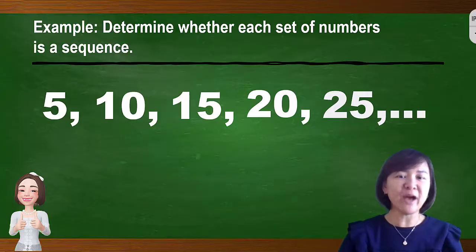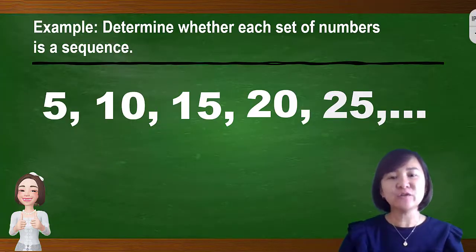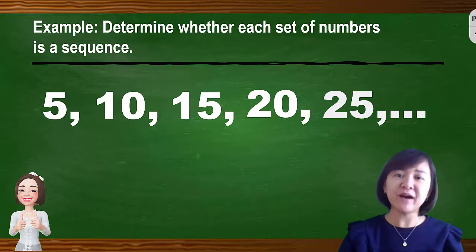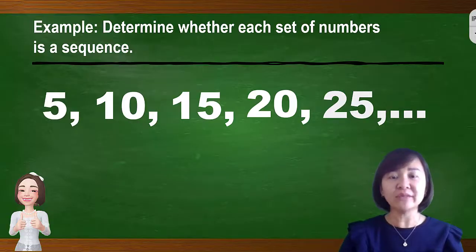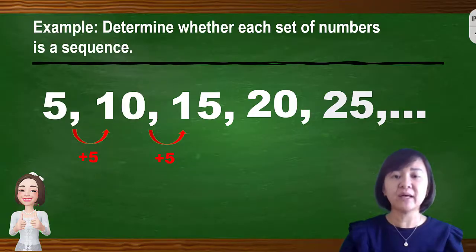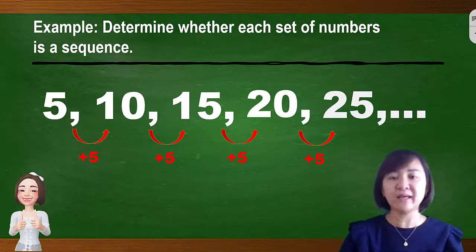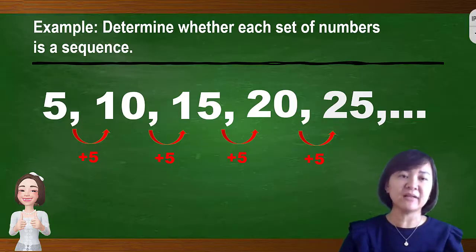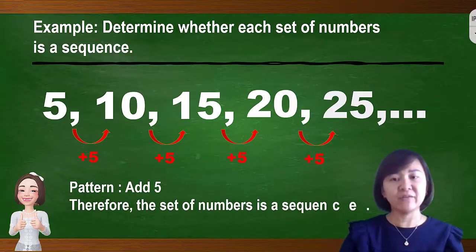Next, an example to determine whether each set of numbers is a sequence. We need to determine whether the given set of numbers is a sequence or not. To identify whether it's a sequence, we must find out the pattern. From 5 to 10 to 15, the pattern is plus 5. From 10 to 15 is also plus 5. The next term is 15 plus 5 equals 20, and 20 plus 5 equals 25. So the pattern is plus 5, and therefore this set of numbers is a sequence.